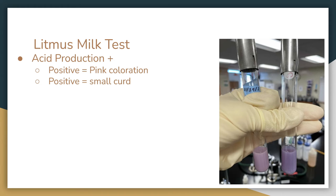Next, I did a litmus milk reaction. With this, I was able to confirm if acid production was occurring or not. In the image to the right, we'll see two vials. The vial on the right acted as a control and was bacteria-free, whereas the vial on the left was inoculated with my unknown. From this, I discovered that whatever the unknown was, it was producing significant amounts of acid.